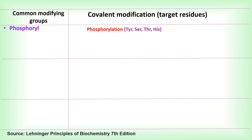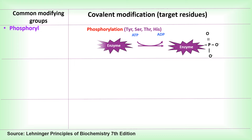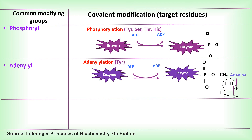Phosphorylation occurs on tyrosine, serine, threonine, and histidine amino acid residues, with ATP providing the phosphoryl group. Adenylylation occurs on tyrosine residues, with ATP providing the adenylyl group to tyrosine.